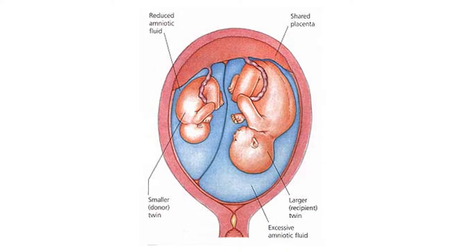If blood does not flow evenly between the twins, one gets more blood — called the recipient twin — and the other gets reduced blood — called the donor twin. The uneven blood flow results in the recipient twin growing bigger due to extra nutrients and fluid, while the donor twin is deprived. The extra fluid in the recipient twin can put a strain on its heart, and the body gets rid of the excess fluid by producing more urine.